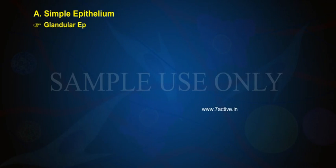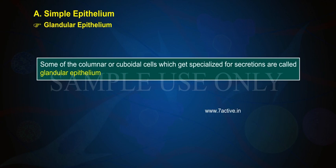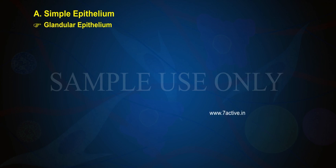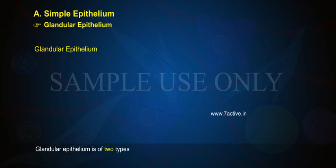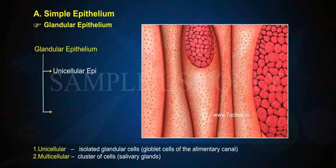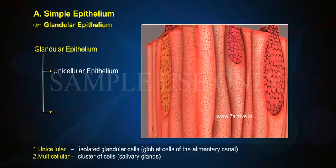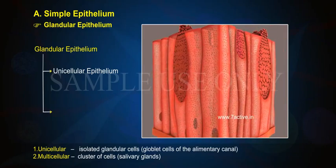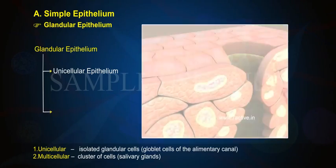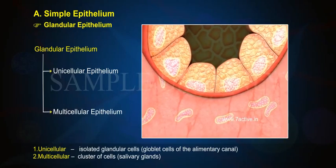Glandular epithelium: Some of the columnar or cuboidal cells which get specialized for secretions are called glandular epithelium. It is of two types: unicellular — isolated glandular cells such as goblet cells of the alimentary canal — and multicellular — a cluster of cells such as salivary glands.